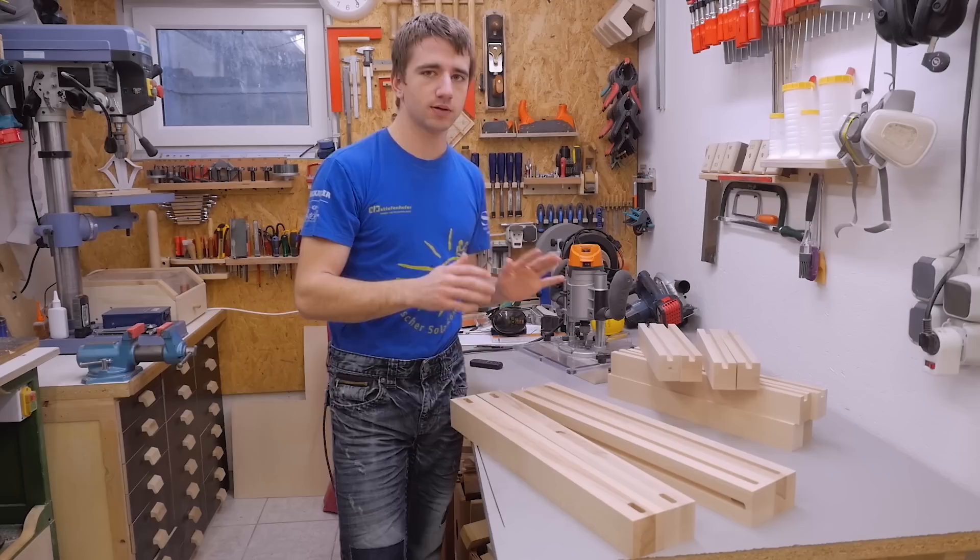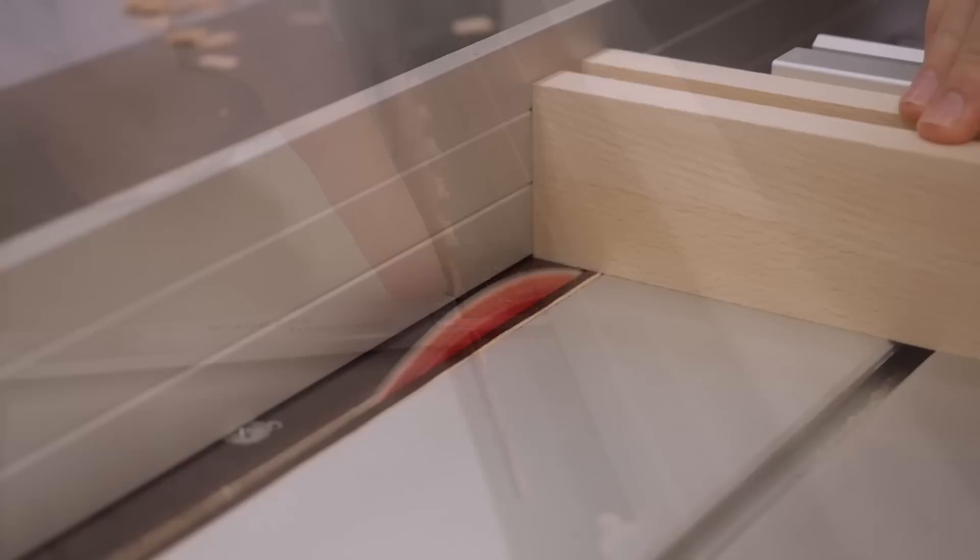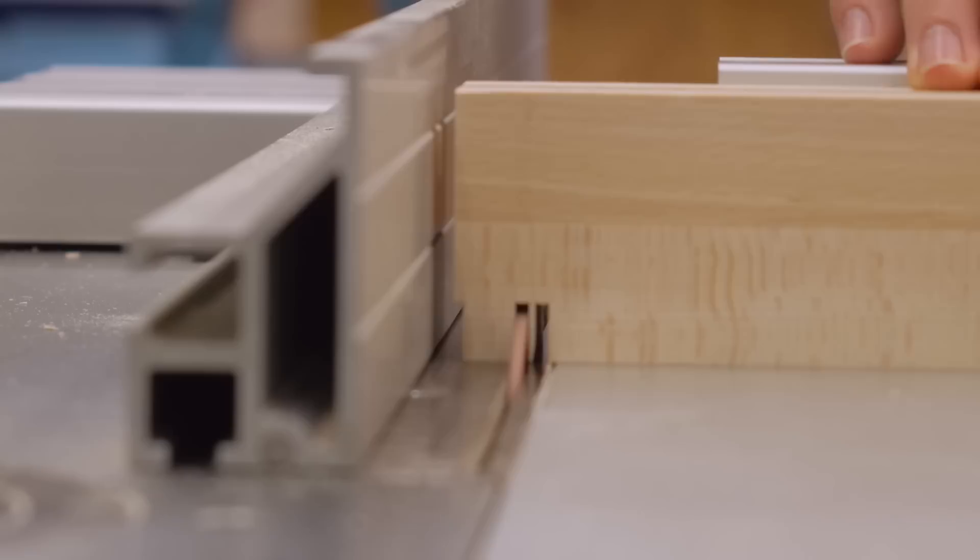Except for squaring the ends, the mortises are now done, and before I square them I first cut the tenons on all the other pieces. It could be also done with the router jig but is much simpler with the table saw. I designed the mortises to be 20mm long, so I set the fence to be exactly 20mm from this edge of the blade.